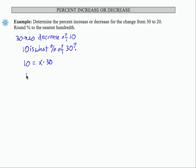I'm going to divide by 30 on both sides, which gives me 10 over 30 equals x. If I perform that computation on my calculator, 10 divided by 30 is 0.3 repeating. So I'm going to write that as 0.33 since we want to round to the nearest hundredth.